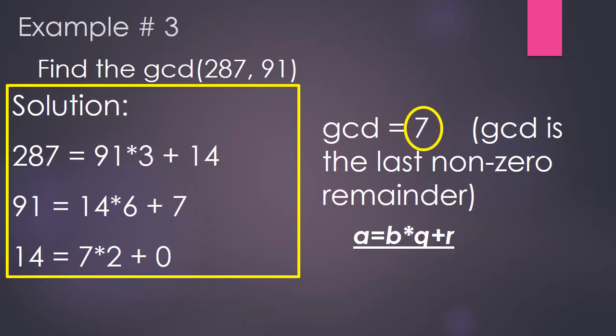Let's have the last example: find the GCD of 287 and 91. Using the same statement, A equals 287 and B equals 91. Step 1: 287 divided by 91 gives quotient 3 with remainder 14. The new A is 91 and new B is 14. We divide 91 by 14, giving quotient 6 with remainder 7. The new A is 14 and B is 7. We then divide 14 by 7, giving quotient 2 with remainder 0.